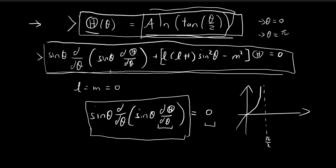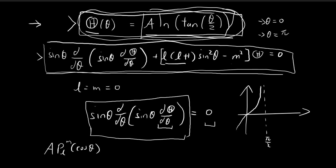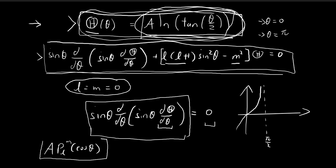Since this is a second-order differential equation, there are two sets of solutions. The first set are the associated Legendre polynomials — these are the normalizable solutions that we do use in quantum mechanics. For the second set, you get solutions like this one. For other combinations of m and l, you will get other non-normalizable solutions. This particular expression corresponds to the specific case when m and l are both equal to 0. We discard all non-normalizable solutions and only consider those in the form of associated Legendre polynomials.